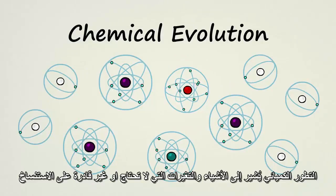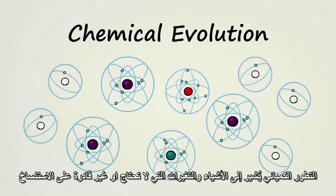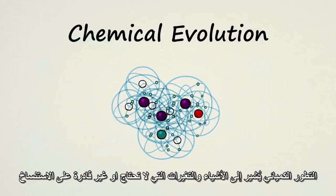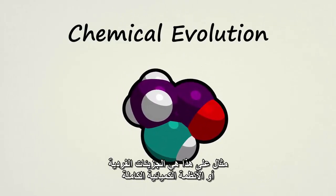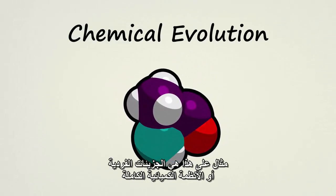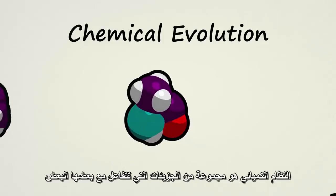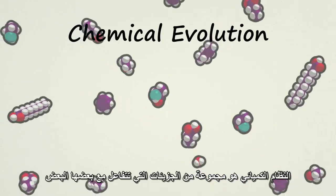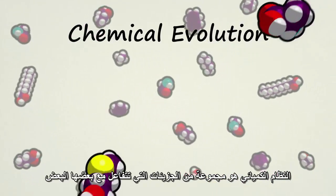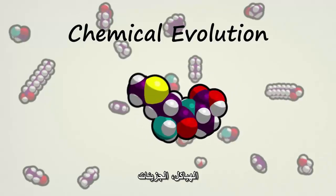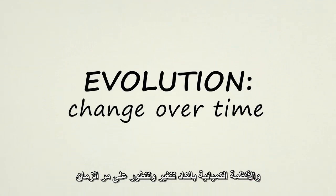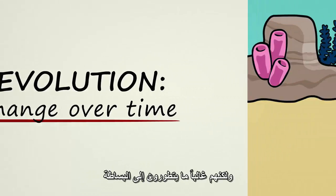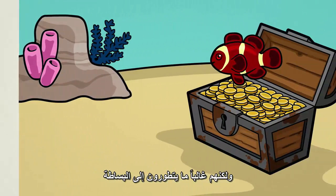Chemical evolution refers to changes in things that need not be capable of reproduction. Examples could be individual molecules or entire chemical systems. A chemical system is a group of molecules that interact with each other. Molecules, structures, and chemical systems almost always evolve or change over time, but they often evolve towards simplicity.